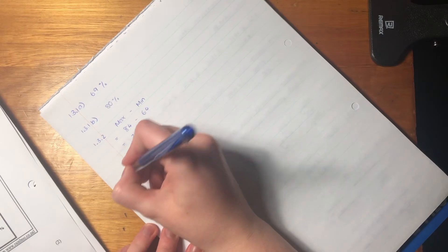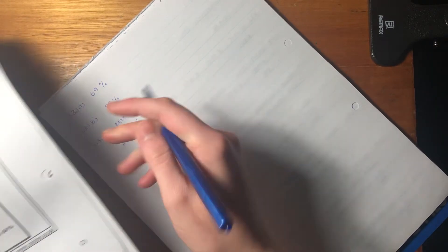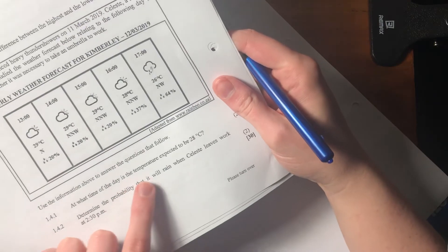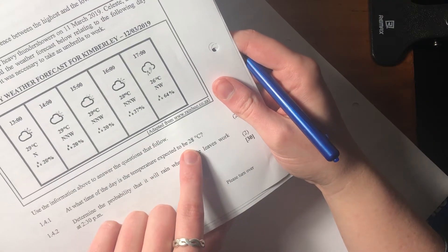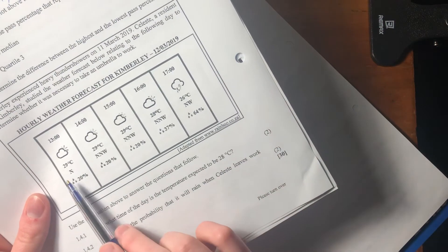Okay, so let me just double check you can see what I'm doing. Excellent. So 1.4.1. Okay, it says, at what time of day is the temperature expected to be 28 degrees Celsius, right? Degrees Celsius is a measure of temperature. And let's look.